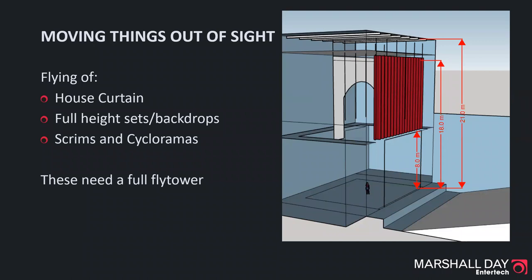Set items could be at least a couple of metres higher than the proscenium, so that an audience member sitting in the front row can't see up and over the top of those set pieces. And there needs to be space above the flown-out items for the rigging itself, the grid, and various fixings. These numbers can change depending on the depth of the stage, where the audience is sitting, and a few other things. But as a general rule of thumb — really just a starting point — a fly tower will need to be about two and a half times the height of the proscenium itself.